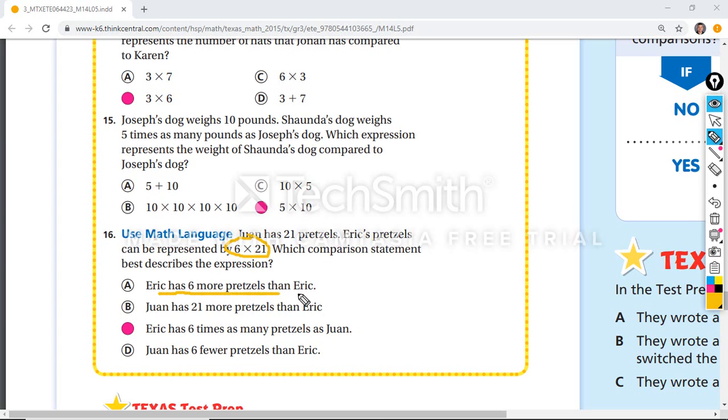Eric has six more, that's not correct. Six more. Juan has 21 more pretzels, that is still this. Eric has six times as many as Juan's pretzels, because we know Juan has 21, six times as many pretzels as Juan, and Juan has fewer than subtraction. That's not going to be good. So your answer is right here.